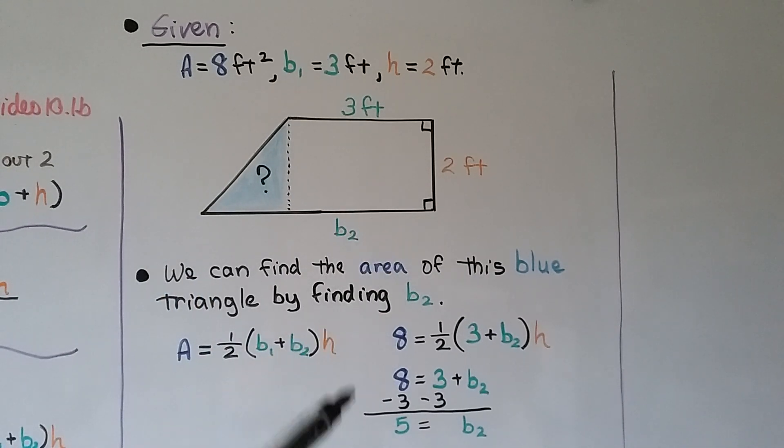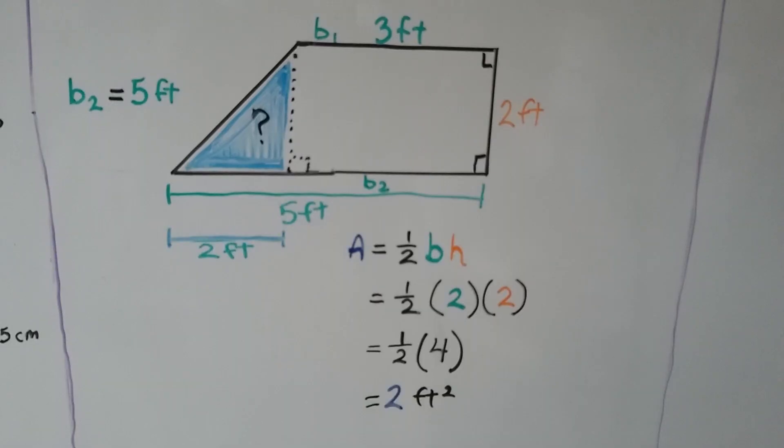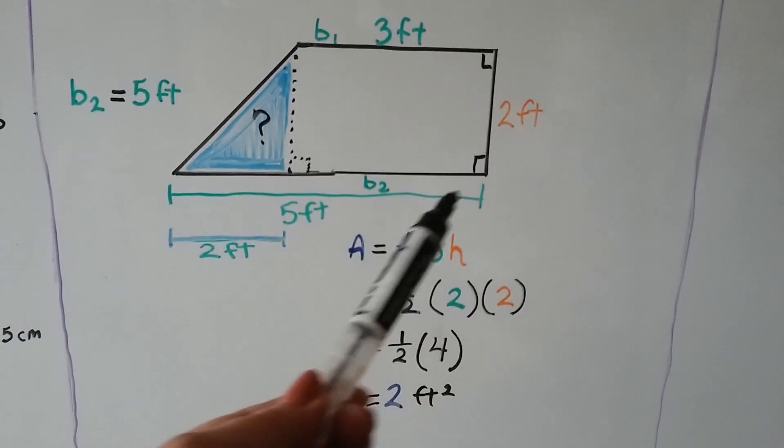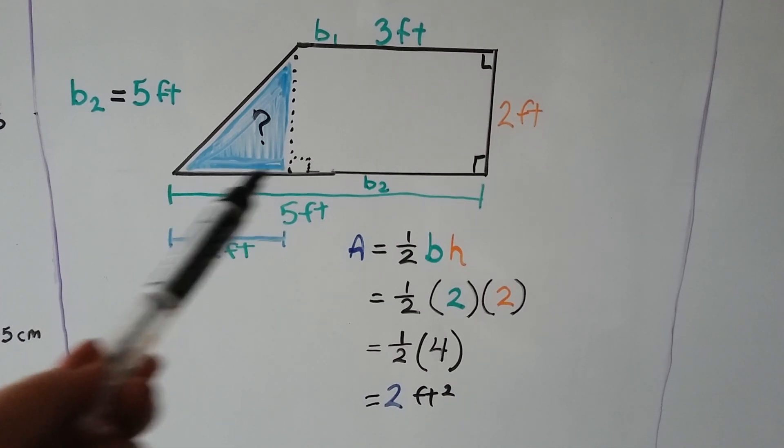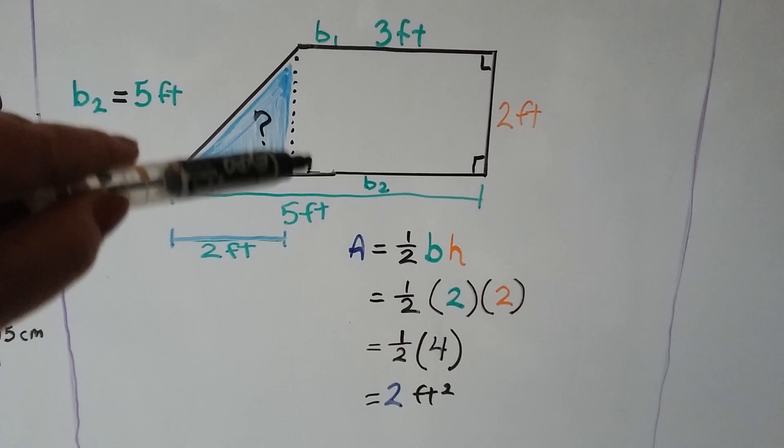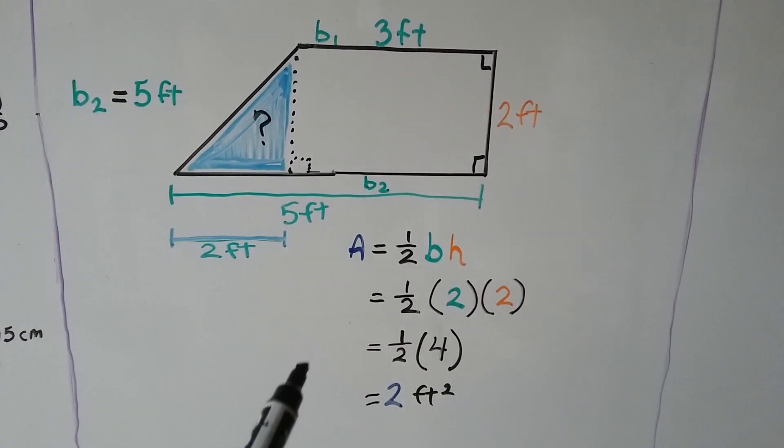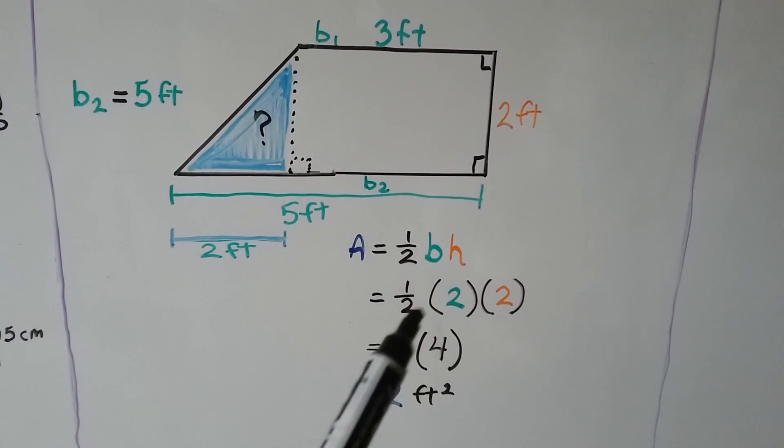We find b sub 2. By substituting everything in and multiplying both sides by the height 2, we get 8 equals 3 plus base sub 2. We find out that base sub 2 is a 5. And if base sub 2 is a 5 and that's a 3, well, then that means this leg is 2 feet. So now we have a 2 foot leg and we have a 2 foot height. And we can do area equals half base height. We can say it's 2 times 2 times a half, which tells us the blue area is 2 feet squared.